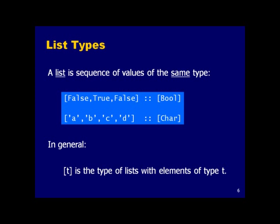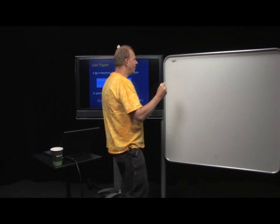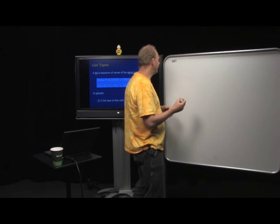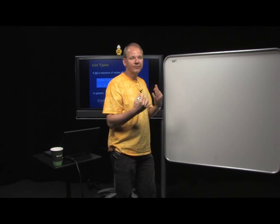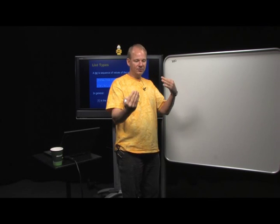A list in Haskell is a sequence of values that all have the same type — very similar to a generic list in an object-oriented language. In Haskell you write lists with square brackets. For example, a list `[False, True, False]` has type `[Bool]`, and a list `['a','b','c','d']` has type `[Char]`.